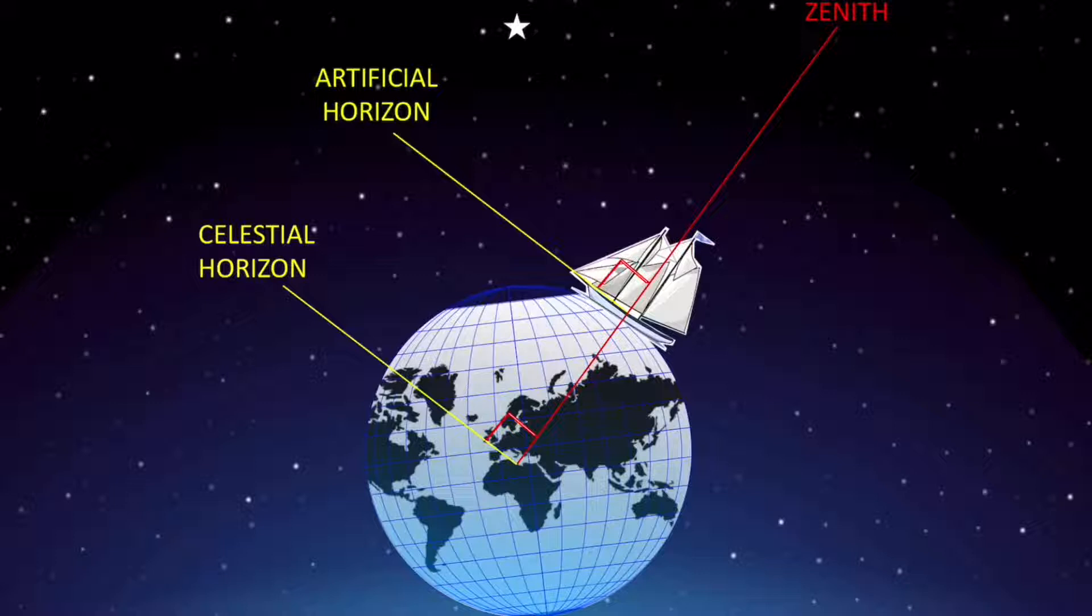Because even globe believers know you cannot measure an angle to a curved surface you think's beneath your feet. Look at this, you're pretending you're living on a globe, but in order to measure angles, you need to pretend you're living on a flat plane. This is cognitive dissonance, globers. You can't have it both ways.